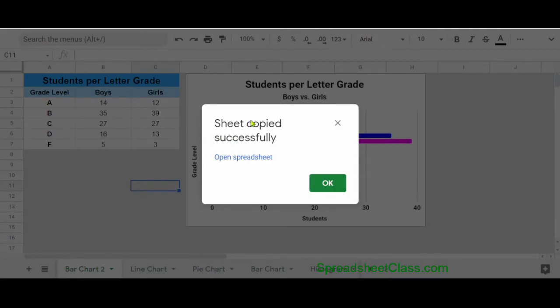Google Sheets will tell you that it's copying, and then after a second, it will tell you that the sheet was copied successfully. Now you can either click OK to close the window, or if you want it to automatically open the spreadsheet that you copied the tab into, you have the option to do this as well.